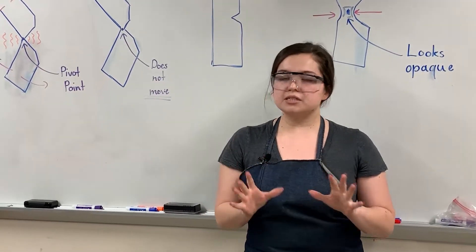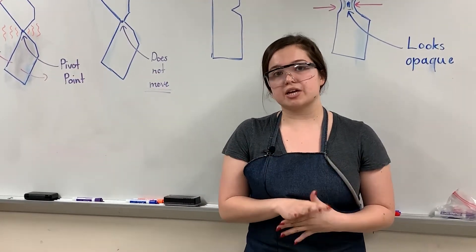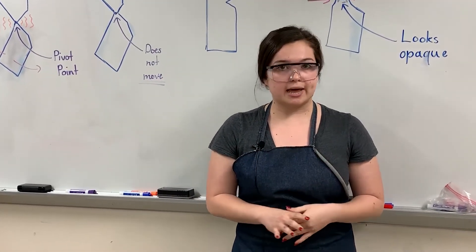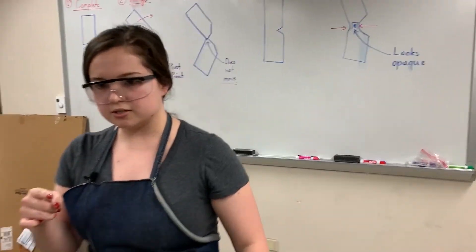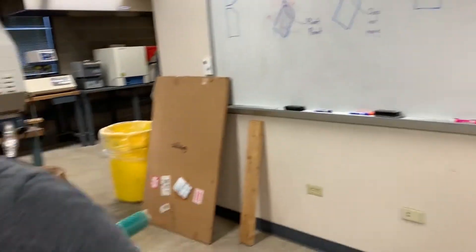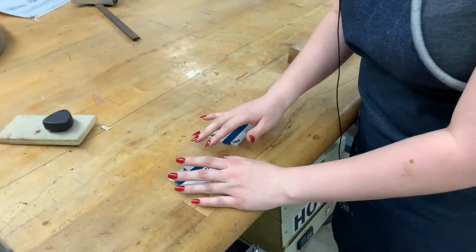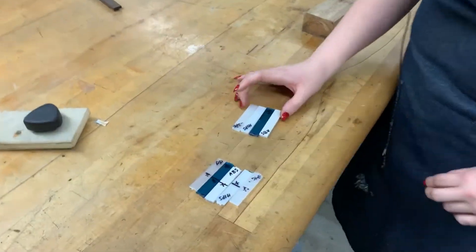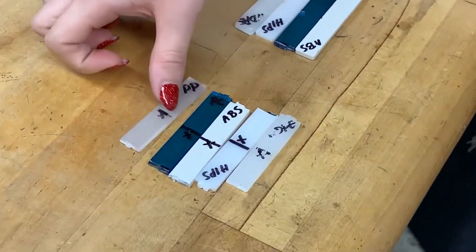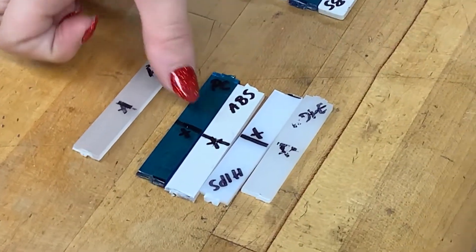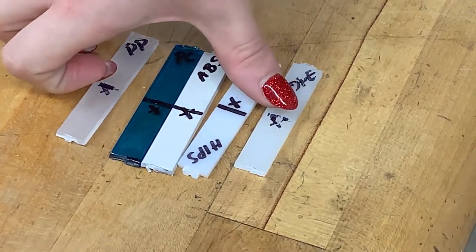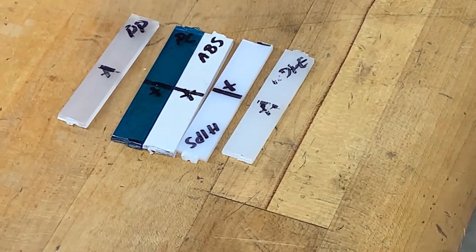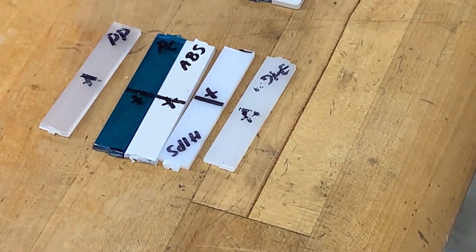There are different types of failures that can occur in this lab. These are the specimens that we have. We're going to be dealing with polypropylene, polycarbonate, ABS, HIPS, and high density polyethylene.